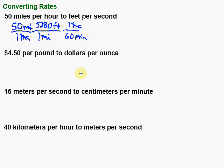Now what do we have? Feet per minute — almost there. Now I need to figure out how minutes and seconds compare. In one minute we have 60 seconds. I've got minutes on the bottom, so I put them on top so they cancel: one minute equals 60 seconds. The minutes cancel, and if I look at my labels, I have feet per second. Perfect — just what I was looking for.